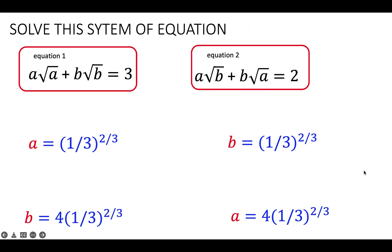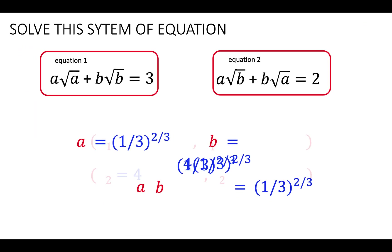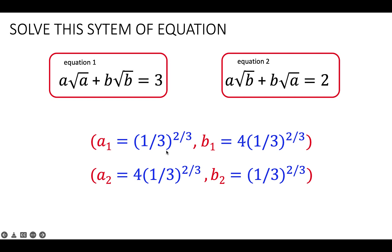We now have the final results. The two solution sets are: first ordered pair, A₁ equals (1/3) to the 2/3 and B₁ equals 4 times (1/3) to the 2/3; second ordered pair, A₂ equals 4 times (1/3) to the 2/3 and B₂ equals (1/3) to the 2/3. This problem is now solved. Thank you very much, and we hope to see you again in our next video. Bye for now.